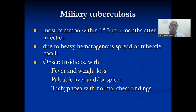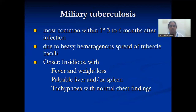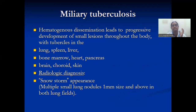Miliary TB is most common within the first 3 to 6 months after infection. It is due to heavy hematogenous spread of tuberculosis bacilli. Onset is insidious with fever and weight loss, palpable liver and spleen, and tachypnea with normal chest findings initially.